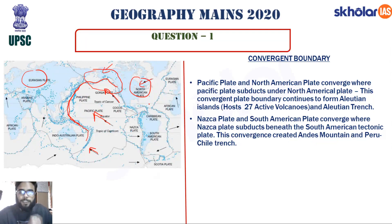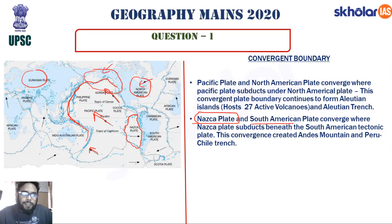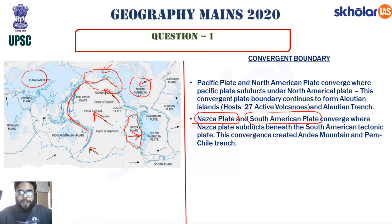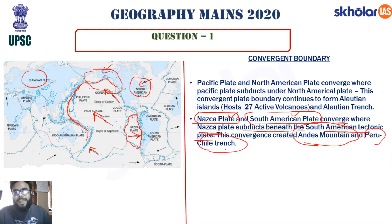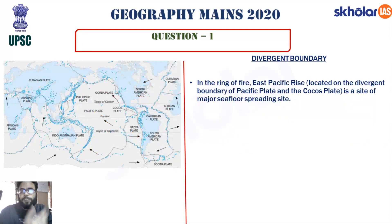In the eastern portion, the Nazca plate and the South American plate converge, where the Nazca plate subducts beneath the South American tectonic plate. As a result, we see the formation of the Andes Mountains and the Peru-Chile Trench. This is where we find the convergent boundary and the features associated with it.